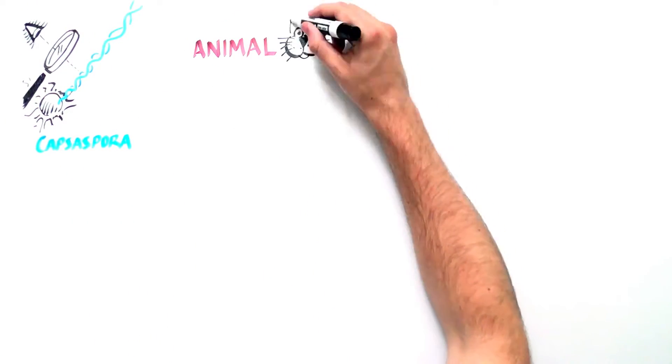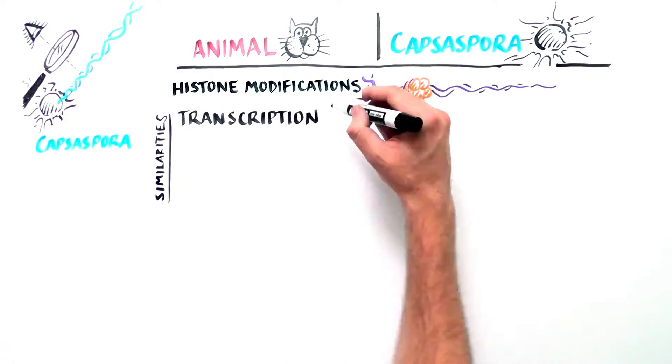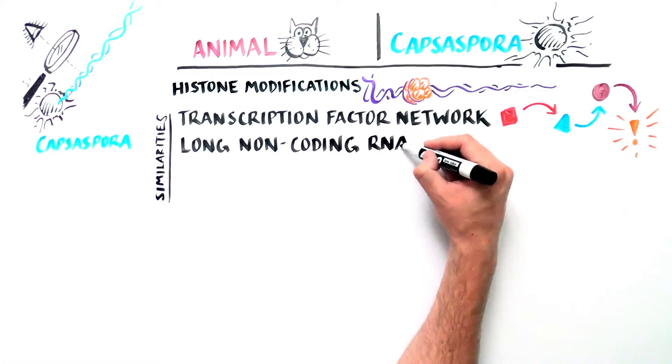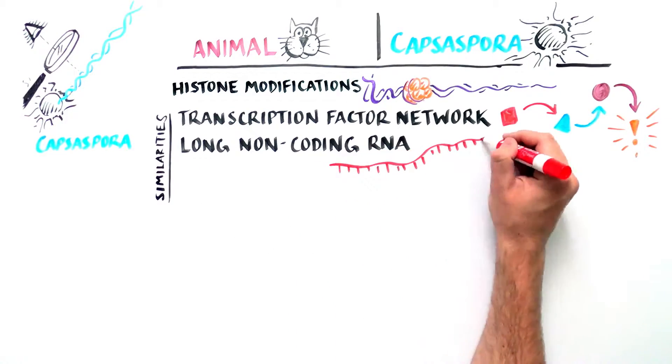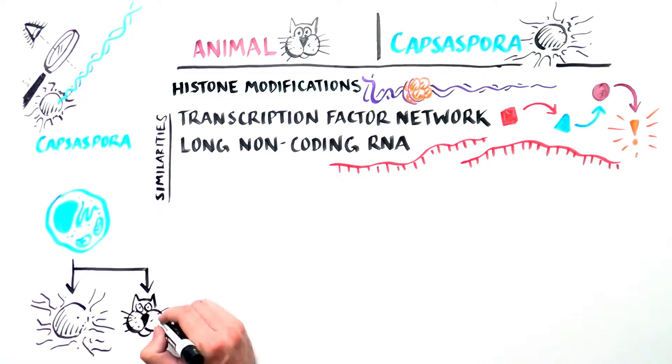The analysis revealed several key similarities and differences between genome regulation in single-cell amoeba and animals. The primary similarities include the presence of histone modifications, conserved transcription factor networks, and regulatory pieces of RNA, all of which are important for determining whether genes are activated or repressed. These findings indicate that the common ancestor